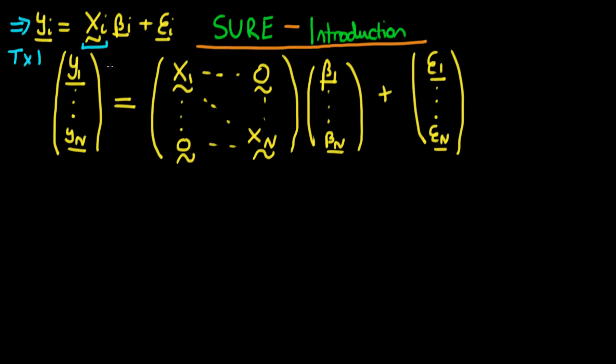And we spoke about how if we had N individuals, each of which having their own dependent variable and their own set of independent variables, we can actually stack the system so we can write it as a system of matrices and vectors which we've indicated here.